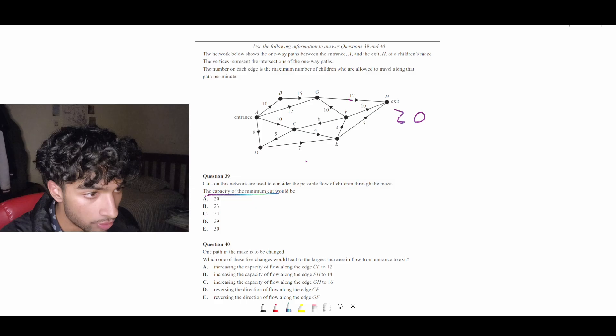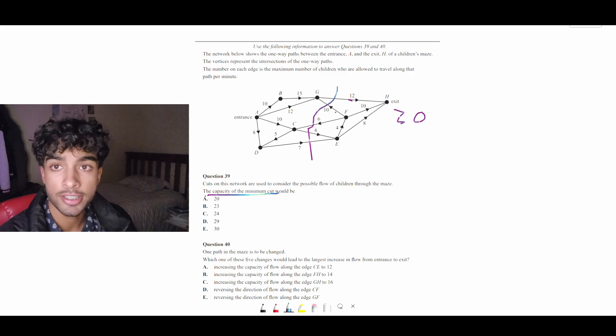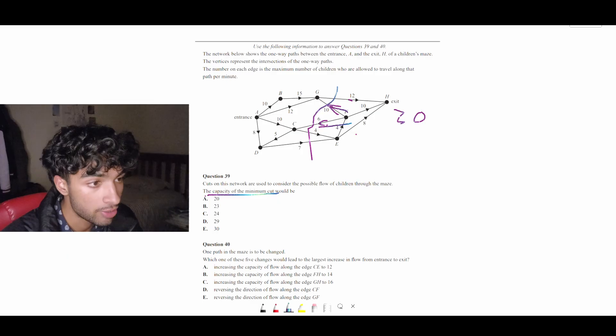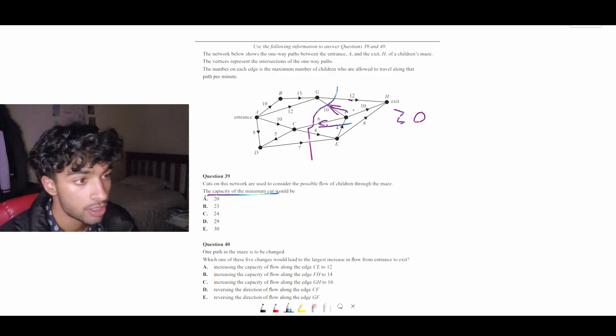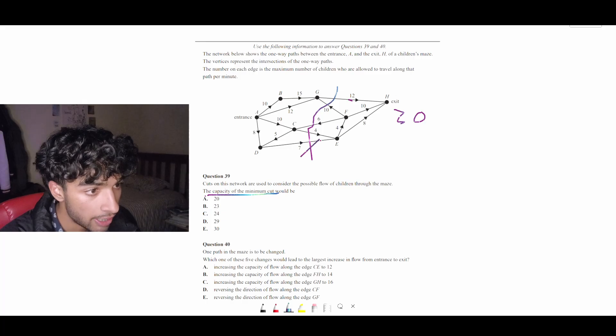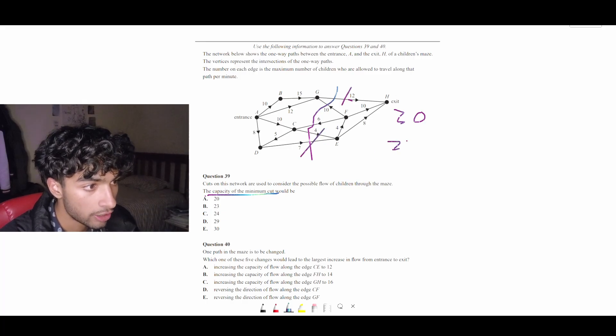Then we have 7 plus 4 plus 12. And as you can see, there's arrows pointing backwards. And as I said before, we want to make sure that we see this and don't add this to our minimum cut. So that was 7 plus 4 plus 12, which is 23. And that looks like the minimum cut so far.